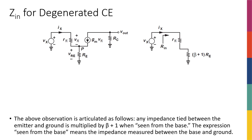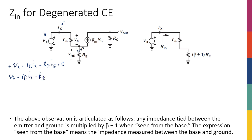Similar to the normal common emitter stage, after finding the gain we need to find Z_in and Z_out. We'll follow the same procedure for calculating these parameters. For Z_in, the input resistance or input impedance, I connect a test voltage vx and current ix and write a KVL: plus vx minus r_pi times ix minus re times ie equals zero.